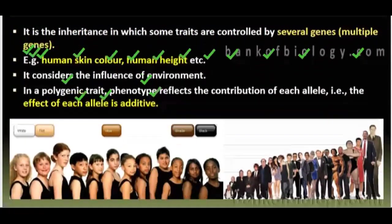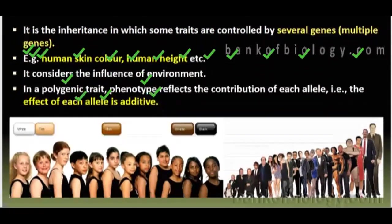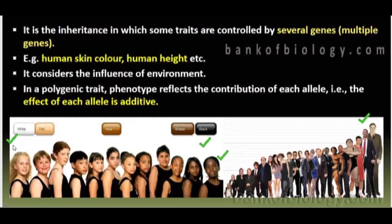You can see in this diagram — height, from dwarf to giant. And color, from very fair to very dark — Albino and Negro. In a polygenic trait, phenotype reflects the contribution of each allele. That is, the effect of each allele is additive.